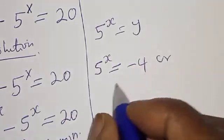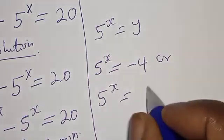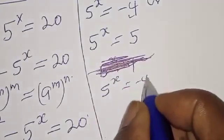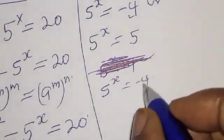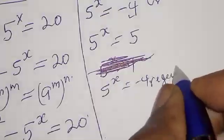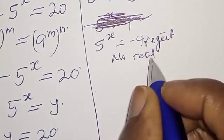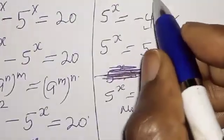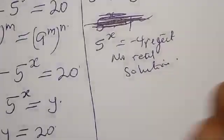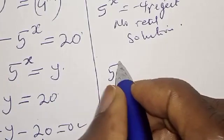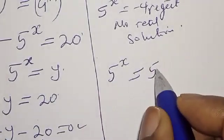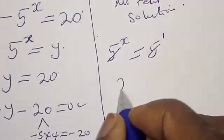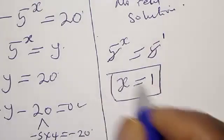So we have 5 raised to power x is equal to minus 4, or 5 raised to power x is equal to 5. From the first case, 5 raised to power x equals minus 4. Since 5 raised to a power cannot be negative, we reject this and conclude there is no real solution from this case. The only solution is 5 raised to power x equal to 5, which is the same as 5 raised to power 1. Since they have the same base, x is equal to 1.